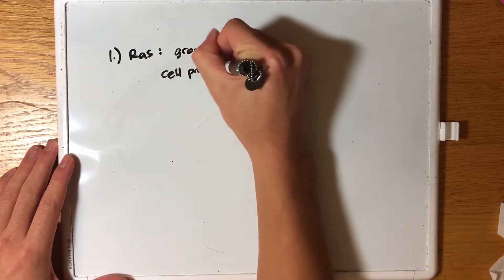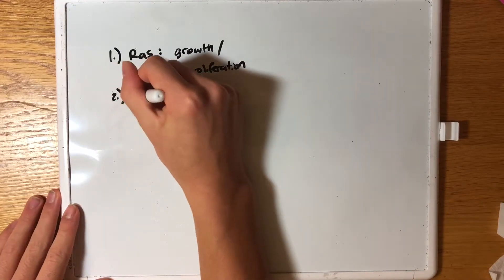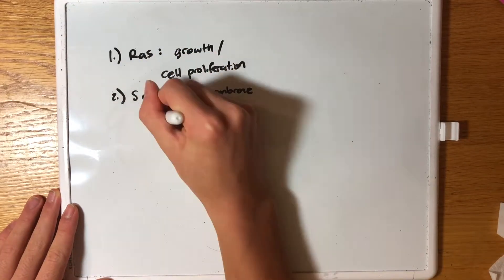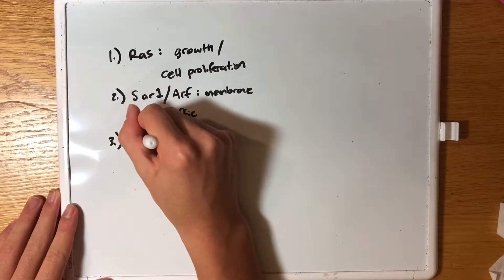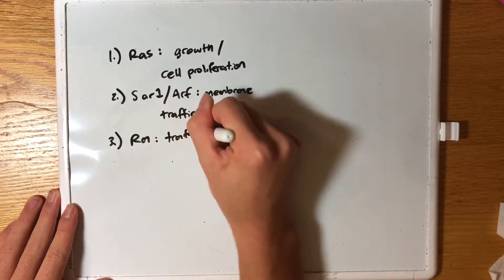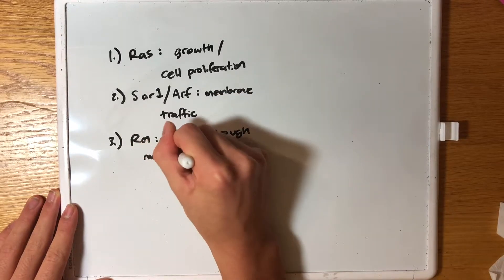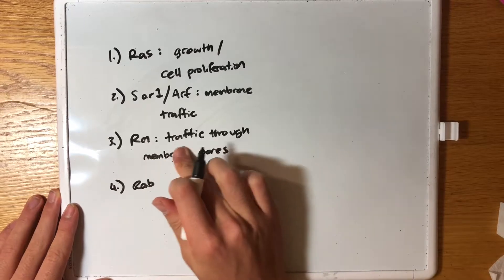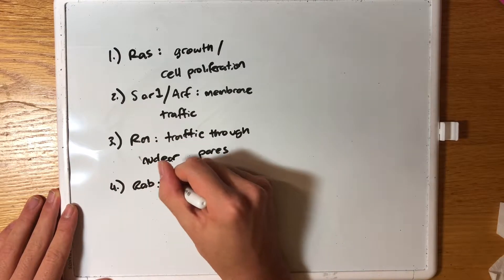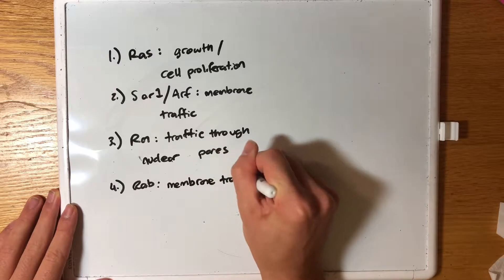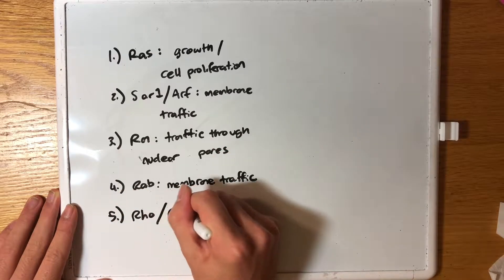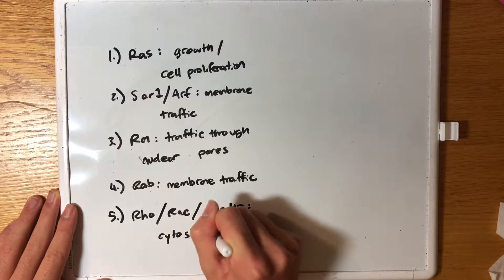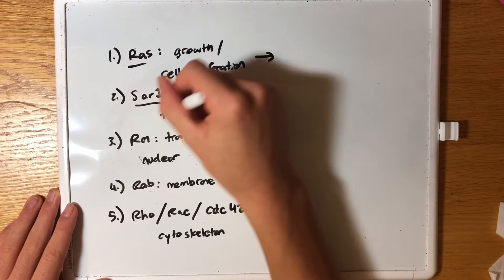The first category is Ras — Ras controls growth, or better put, cell proliferation. Number two is Sar1 and Arf, which control membrane traffic. Number three is Ran, which controls traffic through nuclear membrane pores. Number four is Rab, which also controls membrane traffic. Number five is Rho, Rac, and Cdc42, which have functions involving the cytoskeleton.